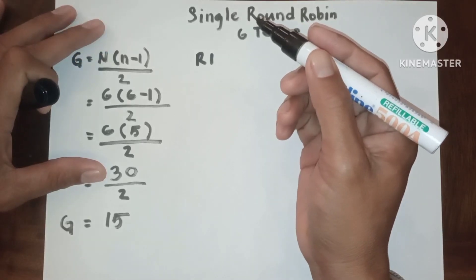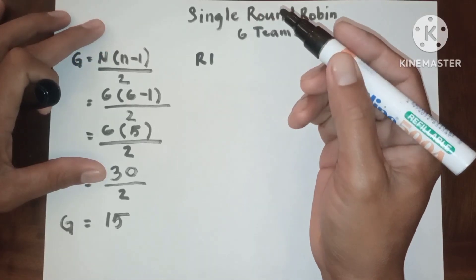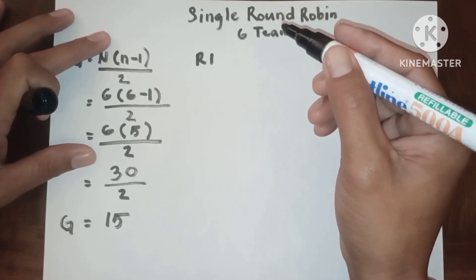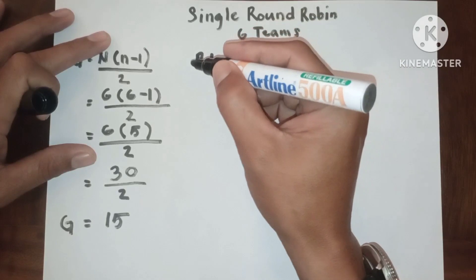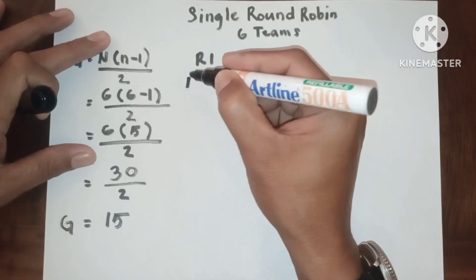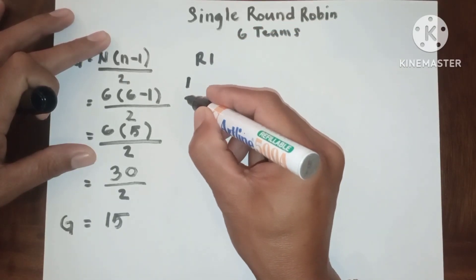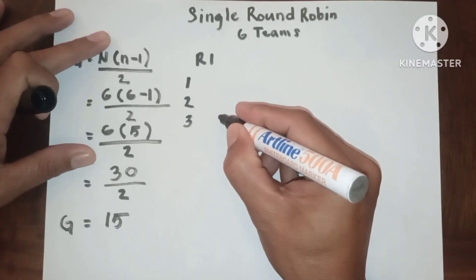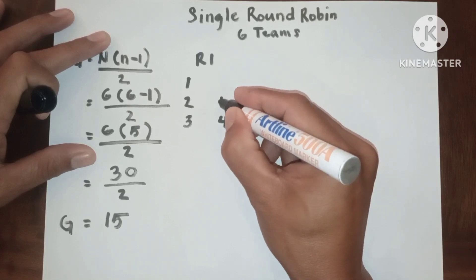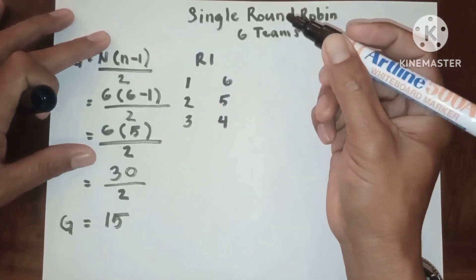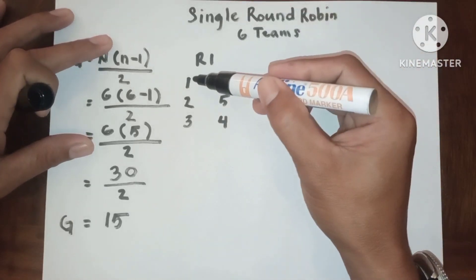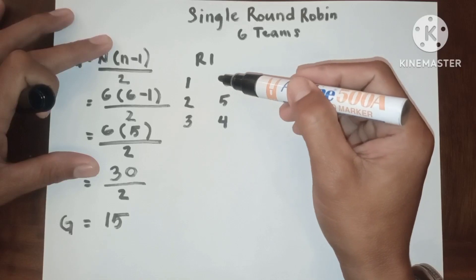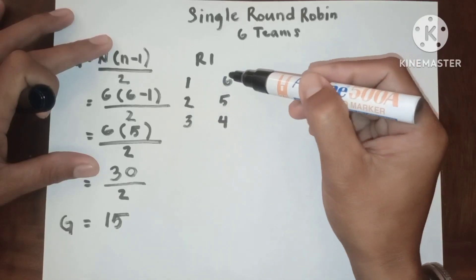Always remember that when you are writing the number of teams or number of entries, it must be written in two vertical columns — the first column and the second column — and it must be written counter-clockwise.